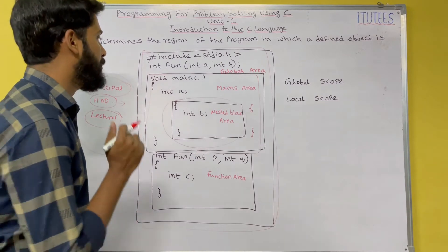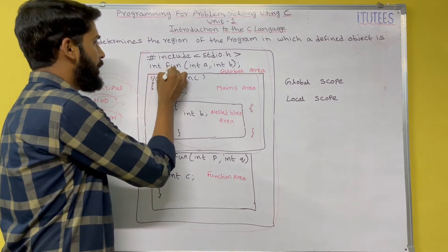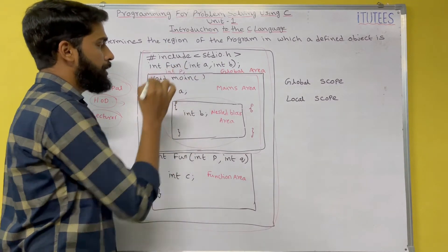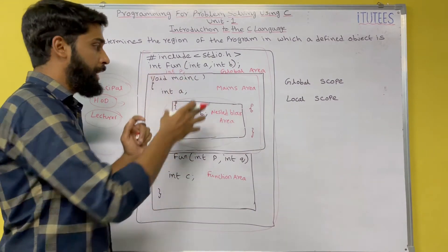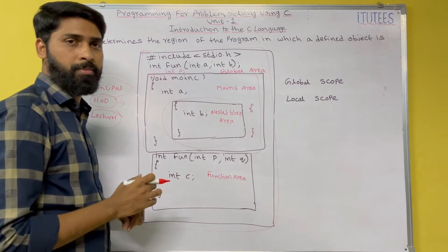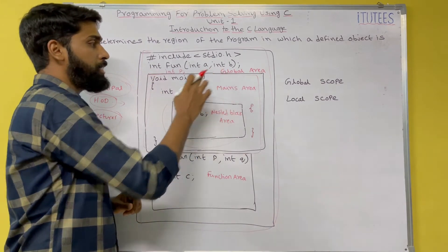Now, scope is nothing but, for example, here I am declaring int p, int p. Now, so this p can access from any place of the program. So why it is declared as global.